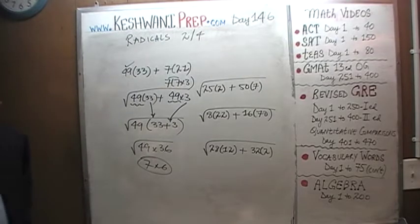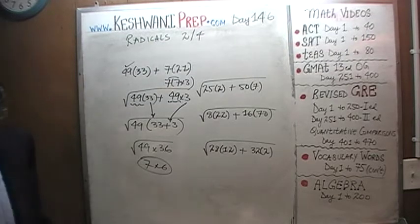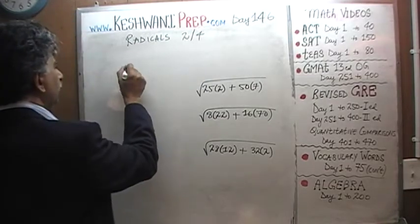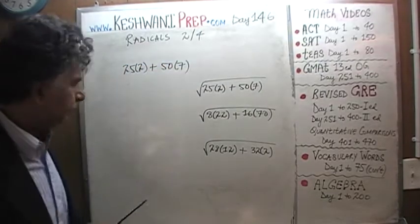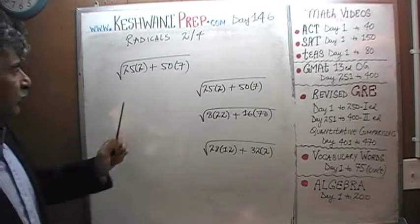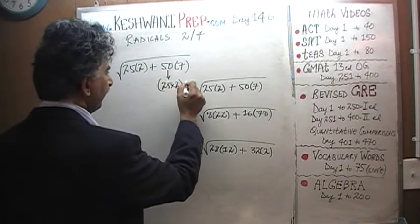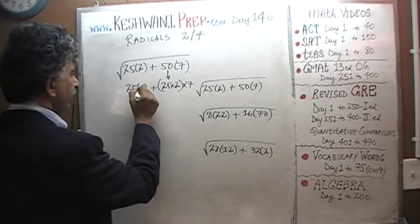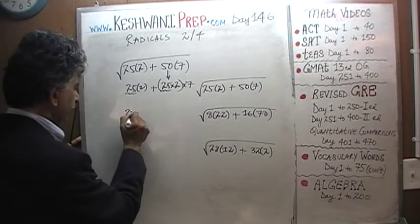Let's do the next one. √(25×2) + √(50×7). Again, this is 25. We have to make this into 25. Let's write 50 as 25×2×7. And here we have √(25×2). We can take 25 as a common factor. Let's take it out.